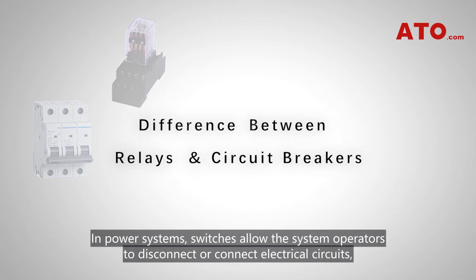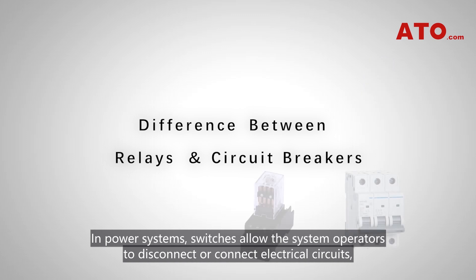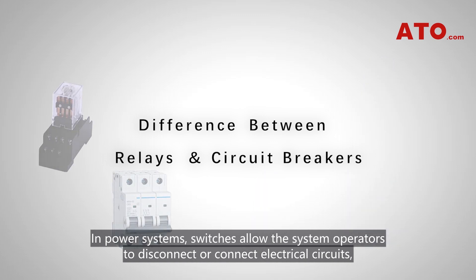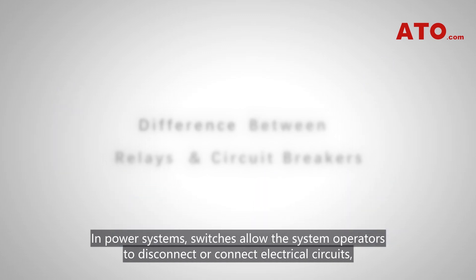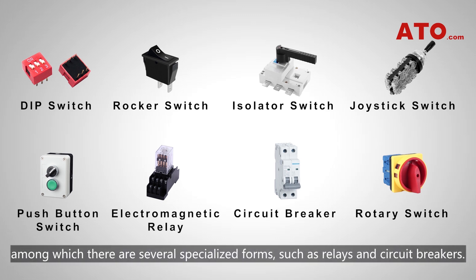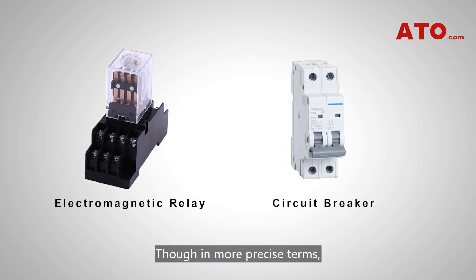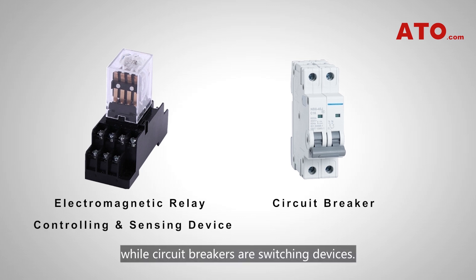In power systems, switches allow the system operators to disconnect or connect electrical circuits. Switches come in various configurations, among which there are several specialized forms such as relays and circuit breakers. Though in more precise terms, relays are controlling devices while circuit breakers are switching devices.